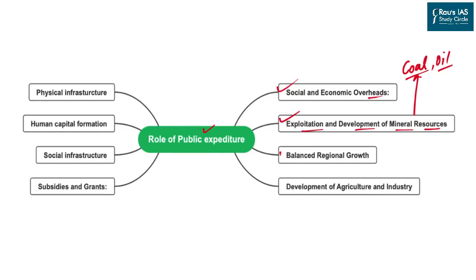The next benefit is balanced regional growth. In order to reduce the disparity between different states as well as between the centre and states, public expenditure is one of the best solutions a developing country can have. Public expenditure also helps in the development of agriculture and industry — agriculture being the largest employer in the rural sector and industry along with services being the largest employer in urban areas, so public expenditure can target both simultaneously.